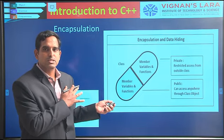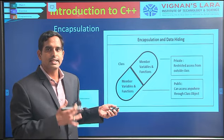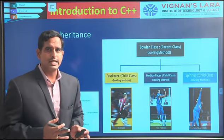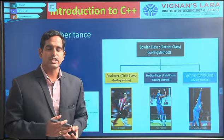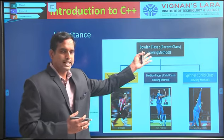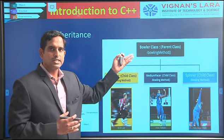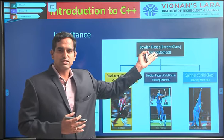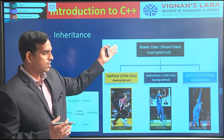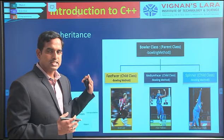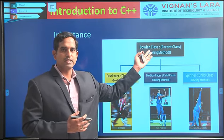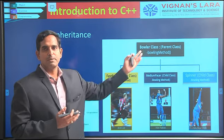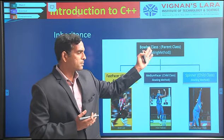Encapsulation and data abstraction together provide data hiding and data security in object oriented programming. I also told you about inheritance, where you provide reusability of existing objects. You will have parent objects and child objects. The child objects try to extend the properties of the parent object, inheriting certain properties and methods from the parent class.